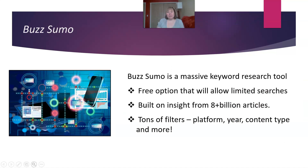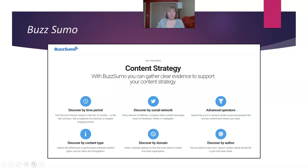BuzzSumo is also very popular. It's a massive keyword research tool with a free option for limited searches. It has a lot of filters and over 8 billion articles, making it super powerful. If you plan to do a lot of research, you might want to upgrade to the paid version, but you can certainly start with the free version. You can filter by content type, time period, social network, and even author.